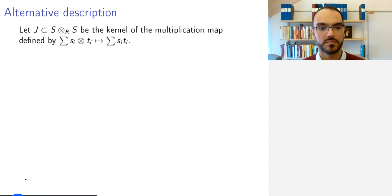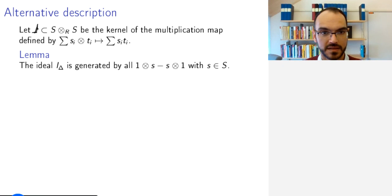If you have S an R-algebra, then you have a map, the multiplication map of S. You can view this as a map from S ⊗_R S to S. So you look at the kernel of this multiplication map. I have a typo here—this ideal I want to call I_Δ.